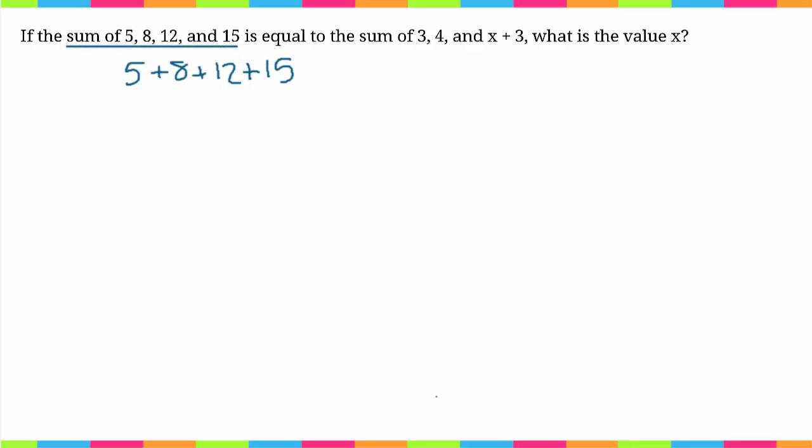Perfect. So the second part says "is equal to". This is the second part of our equation. For that, we're going to write an equal sign. That one's really easy—that's all "equal to" means. So now we're going to look at this third part.